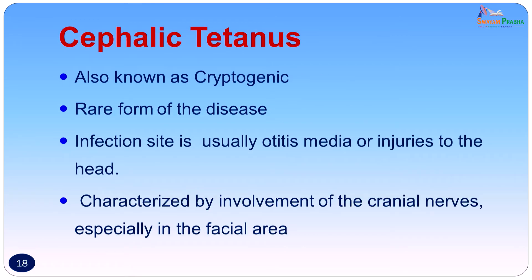Cephalic tetanus, also known as cryptogenic tetanus, is a rare form of the disease. The infection site is usually in the middle ear where the patient may have otitis media, where other aerobic organisms are present, and because of the anaerobic environment occurring in the closed ear, tetanus spores easily germinate. Injuries to the head can be another form of cephalic tetanus. It is characterized by involvement of the cranial nerves, specially in the facial area.